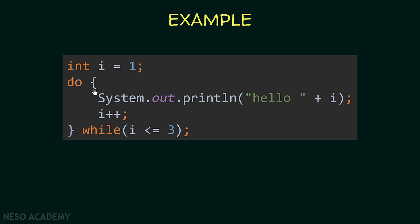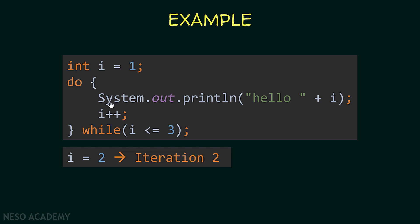So how does this work exactly? First, we execute the first iteration regardless of the condition — so iteration one runs without checking the condition. We print hello 1 and increment i, so now i equals 2. We check: is 2 less than or equal to 3? Yes, so we execute the second iteration, print hello 2, and increment i to 3. Is 3 less than or equal to 3? Yes, so we execute iteration three, print hello 3, and increment i to 4. Is 4 less than or equal to 3? No — so we are done executing the do-while loop.